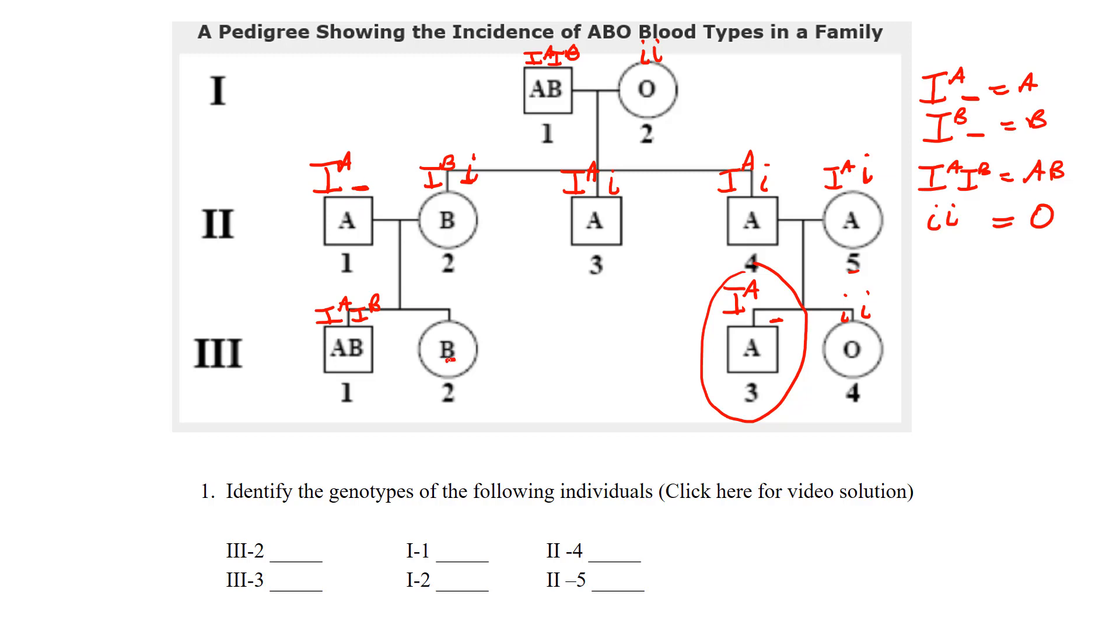Look at their kid that they had with B blood. If you thought, now just let's say hypothetically you thought it was an I^A I^A, all they could possibly contribute to that B son is an A allele, and there's no way you would have a B baby. That would be an AB baby.